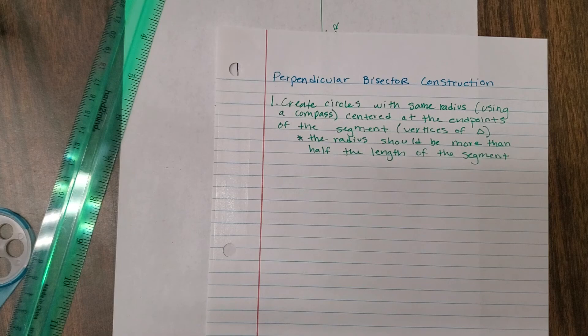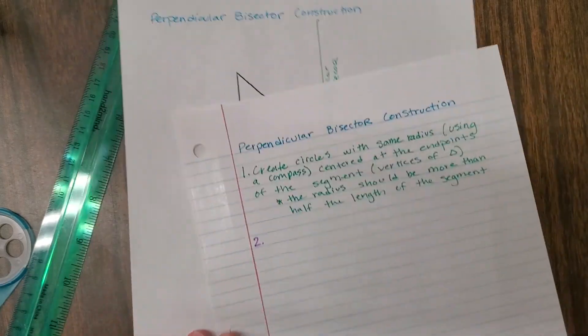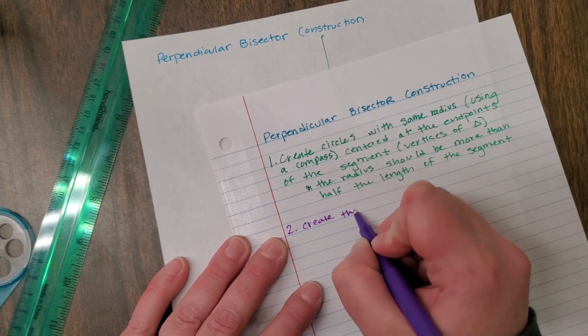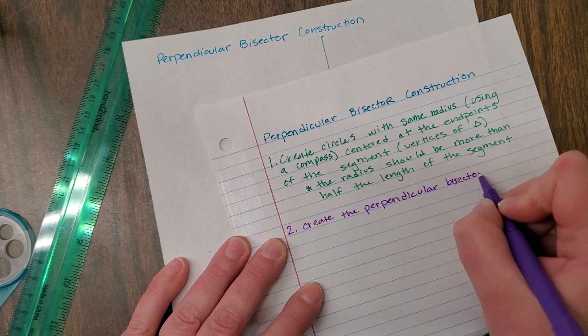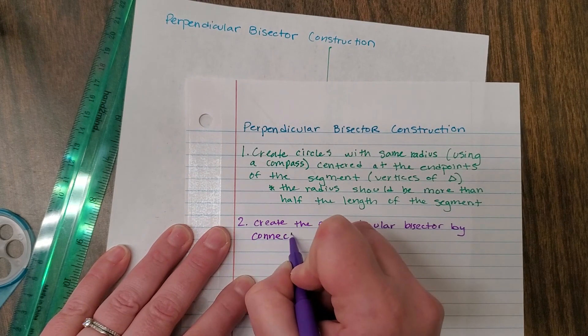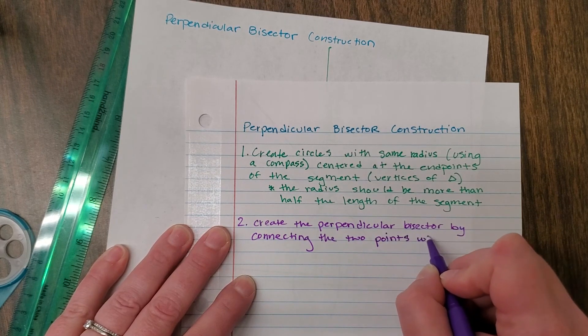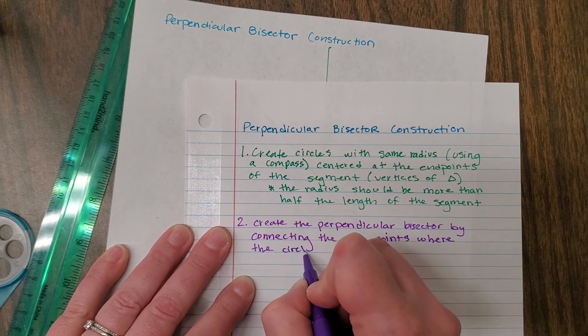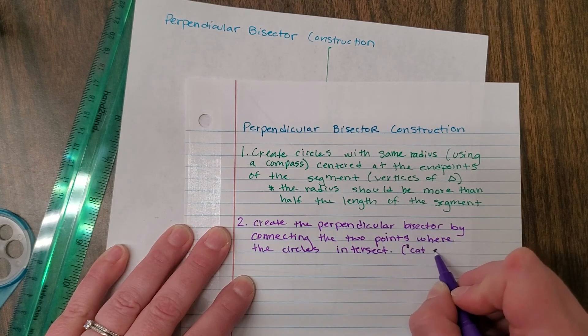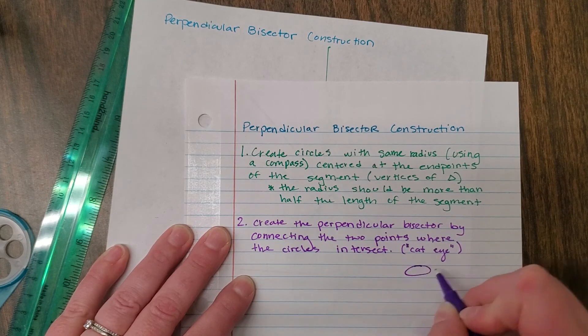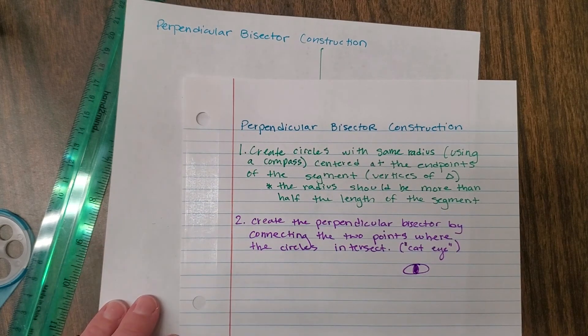So if we look at what we're doing here for our next step, step two is going to be create the perpendicular bisector by connecting the two points where the circles intersected. And again, we can call that the cat eye. They're kind of thinking of a cat eye, how it's very in the center. Anyway, so that is what we need to do there.